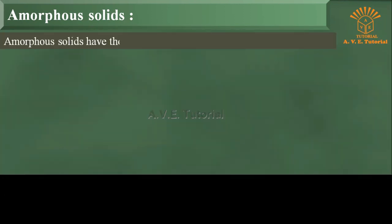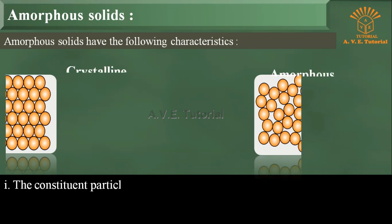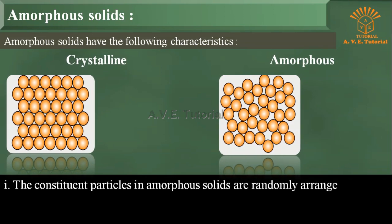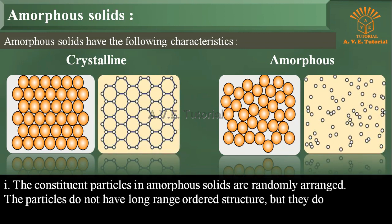Amorphous solids have the following characteristics. One: The constituent particles in amorphous solids are randomly arranged. The particles do not have long-range ordered structure, but they do have a short-range order.